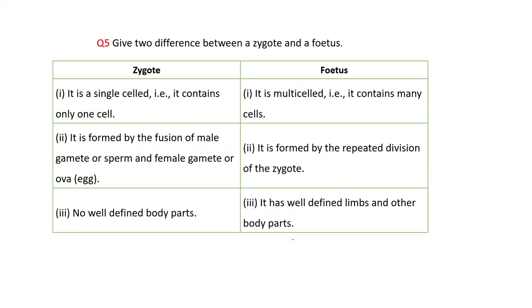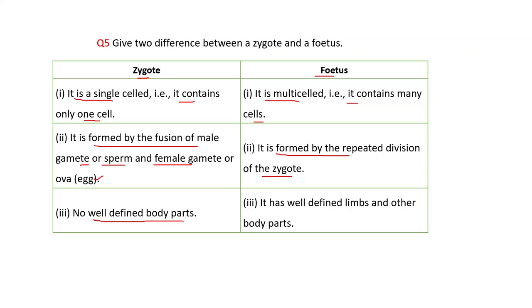Next question: Give two differences between a zygote and a fetus. Zygote: it is a single cell. Fetus: it contains many cells. Zygote: it is formed by the fusion of a male gamete (sperm) and a female gamete (egg). Fetus: it is formed by the repeated division of the zygote. Zygote: no well-defined body parts. Fetus: it has well-defined limbs and other body parts.